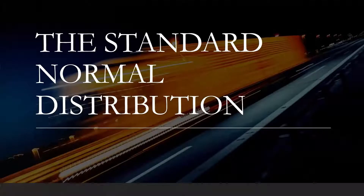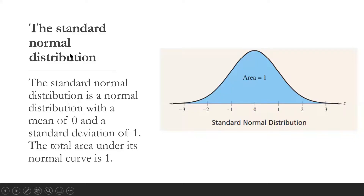Let's talk about the standard normal distribution. The standard normal distribution is a normal distribution with a mean equal to 0 and a standard deviation of 1. The total area under its normal curve is equal to 1.